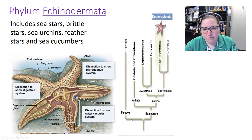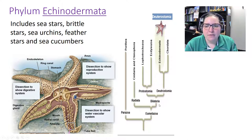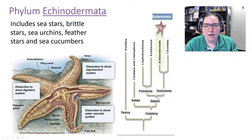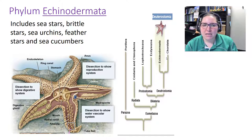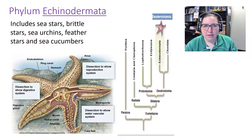On the phylogenetic tree, Eumetazoa, Bilateria, Deuterostomes — then Echinodermata. Echinodermata means 'spiny skin.' This includes sea stars, brittle stars, sea urchins, feather stars, and sea cucumbers. You would not want to step on a sea urchin.